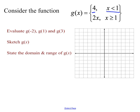To evaluate some values: for g of negative 2, I think about which piece to use when my input is negative 2. I look at which interval negative 2 falls in. Since negative 2 is below one, I use the top piece, and g of negative 2 equals 4.